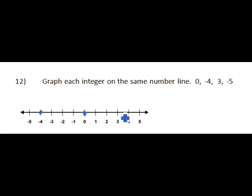Positive 3 would be to the right of 0, 3 spaces to the right. And negative 5 would be to the left of 0, 5 spaces to the left. So, I have plotted the integers on the number line.